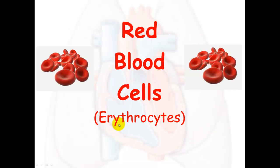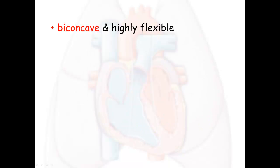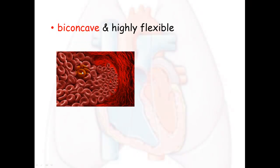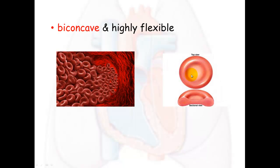Red blood cells, also known as erythrocytes, have a biconcave shape. What biconcave means is that they have a small indentation — they almost look like little donuts. From the top they look like a donut, but from the side you can see there's an indentation at the top and one at the bottom, like a little cave at the top and a cave underneath. It has two caves, so it's called bi — meaning two — and concave, which is the term for that indentation.